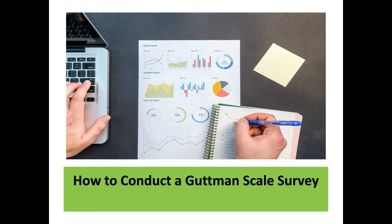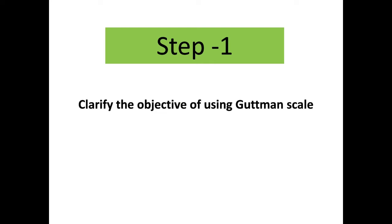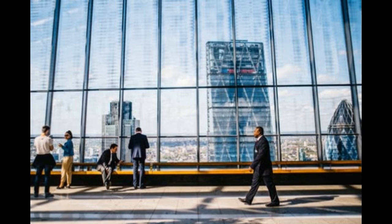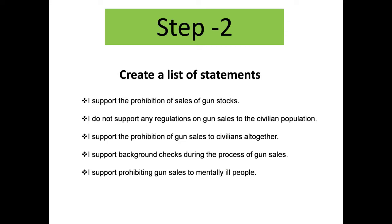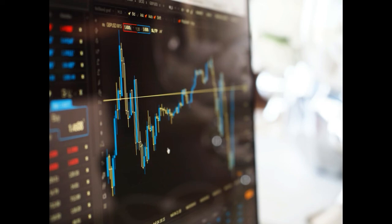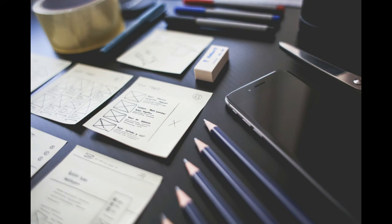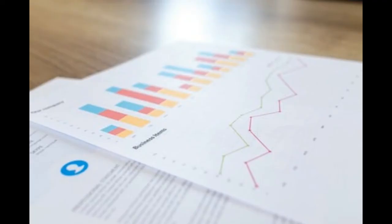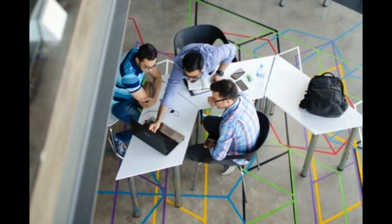To conduct a Guttman scale survey: Step one — clarify the objective of using the Guttman scale, as every scaling method should have a clearly defined objective for effective implementation. Step two — create a list of statements; for example, statements about gun sales regulation arranged hierarchically: supporting prohibition of gun stock sales, not supporting any regulation on civilian gun sales, supporting prohibition of all civilian gun sales, supporting background checks during gun sales, and supporting prohibiting gun sales to mentally ill people. Step three — associate values to each statement. Experts assign values according to their importance to the topic, answering yes if the statement is in favor and no if it is not. Critically, the values assigned should not involve the personal opinions of the experts.